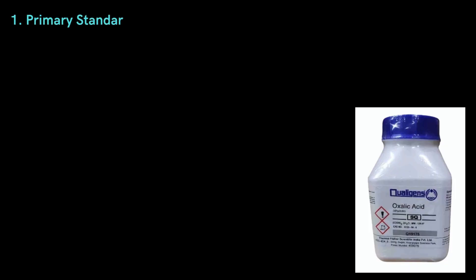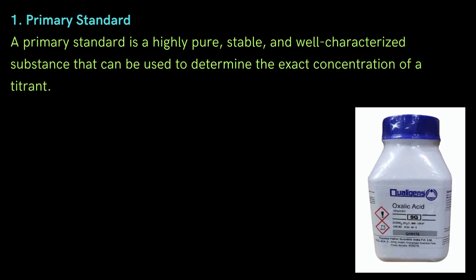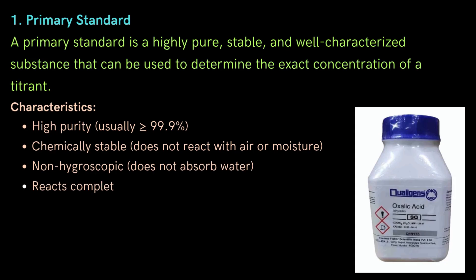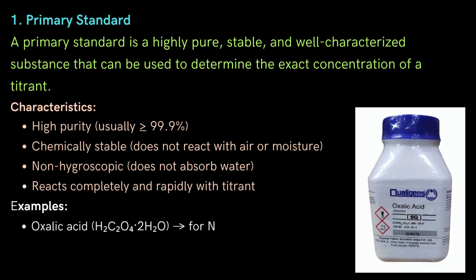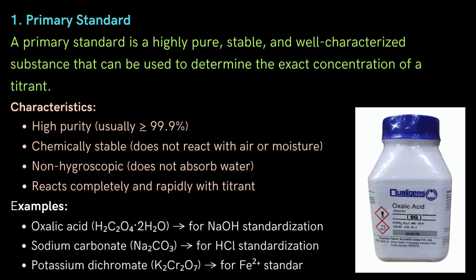We will first know the definition of a primary standard substance. A primary standard is a highly pure, stable, and well-characterized substance used to determine the exact concentration of a titrant. Important characteristics: it has very high purity, usually greater than 99.9%; it is chemically stable and does not react with air or moisture; it is non-hygroscopic, meaning it does not absorb water from the air; and it reacts completely and rapidly with the titrant. Common examples include oxalic acid, used for standardization of sodium hydroxide; sodium carbonate, used for standardization of hydrochloric acid; and potassium dichromate, used for standardization of ferrous ion solutions.